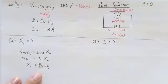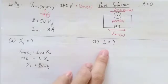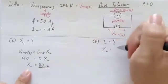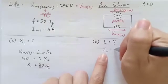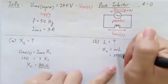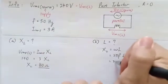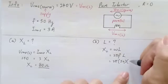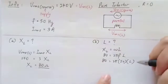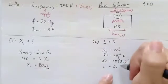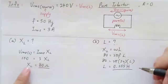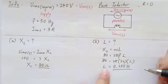Next, to find the inductance L, we use the formula XL = ω × L, where ω = 2π × frequency. Substituting the frequency of 50 Hertz and XL = 80 ohm, we solve for L and get L = 0.255 Henry. The unit for inductive reactance is ohm, while the unit for inductance is Henry.